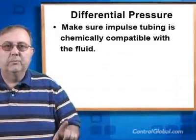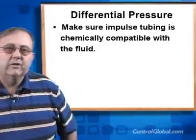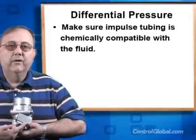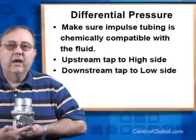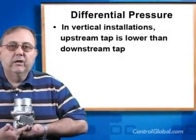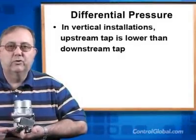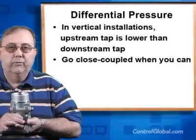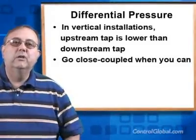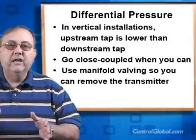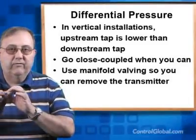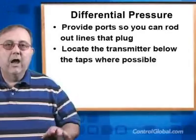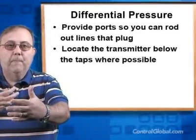The piping between the primary element and the transmitter is called impulse tubing. This is another source of potential problems and measurement error. Make sure the primary element taps are connected to the right ports on the transmitter — the upstream tap should be connected to the high pressure port and the downstream tap to the low pressure port. Remember that in a vertical installation, the upstream tap is below the downstream tap. If possible, use close coupled installations where the transmitter is close to or connected directly to the primary element. In hot applications, you can sometimes use the impulse tubing to cool the fluid. In freezing locations, you may have to heat trace the impulse lines. Impulse tubing should be kept full of liquid or gas, whichever you're measuring. Condensation should be avoided in gas applications, but in hot vapor applications, filling the impulse tubes with condensed vapor actually protects the transmitter.